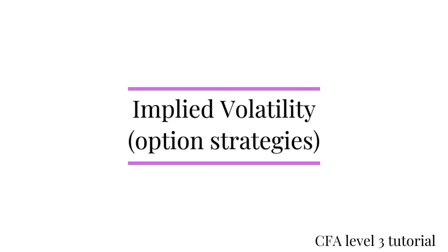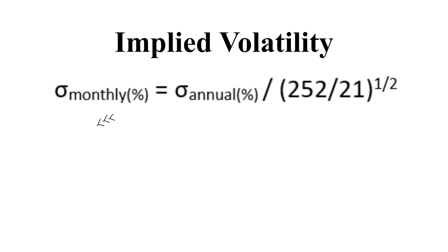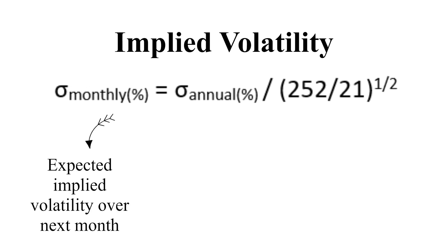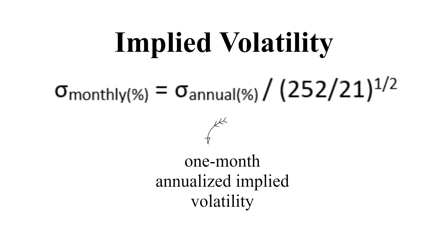Today, let's look at implied volatility and how it impacts the different option strategies an investor may take. The implied volatility over the upcoming next month is always derived from the current pricing of options. We obtain the one-month annualized implied volatility from the current option price. This is often given in the question, so no need to calculate this number by ourselves.